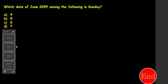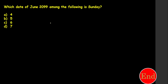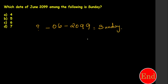Final question: the date is June, 6th month, 2099. I need to find which date in June 2099 was a Sunday. I will select the date 4 and check. Let me do this first — if the date is 4, the odd day contribution from the date is 4.